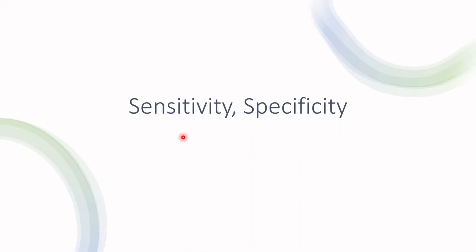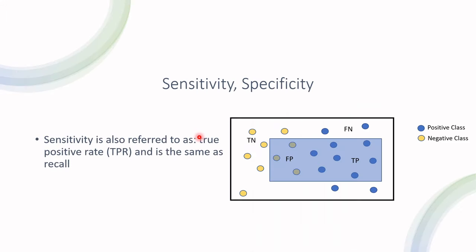Moving forward to the next section, let's talk about sensitivity and specificity. Sensitivity has two other names: true positive rate and recall. So we already know what it means — it's the same as recall. It's very common in statistical analysis and data science for the same measure to have different names. It's confusing, but it's important to understand what each definition means.